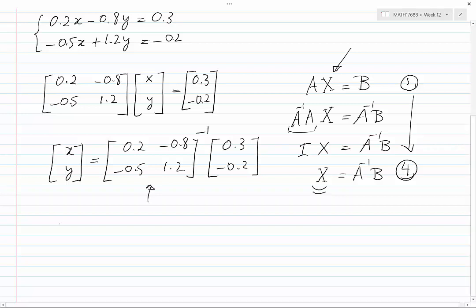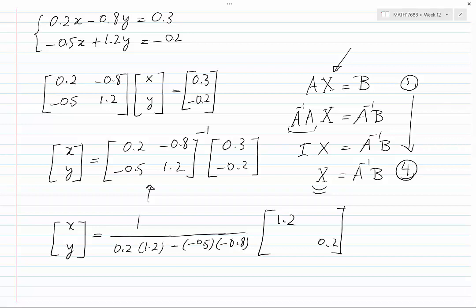Now let's find the inverse. The left-hand side of the equation is the same. The right-hand side becomes the inverse of the square matrix, which would be 1 over the determinant of A, which is the product of the diagonal elements 0.2 and 1.2, minus the product of the off-diagonal elements, which is minus 0.5 times minus 0.8. Then switch the position of the diagonal terms, so you would have 1.2 and 0.2 on the diagonal, and change the sign of the off-diagonal terms to the opposite sign: minus 0.8 becomes 0.8, minus 0.5 becomes 0.5, times 0.3 and minus 0.2.